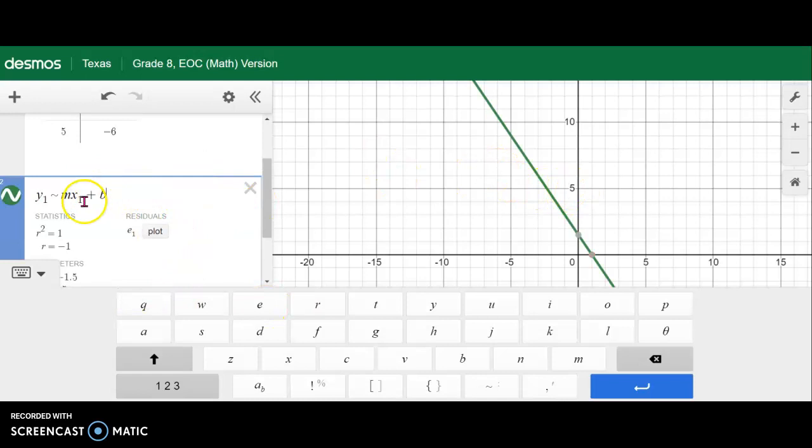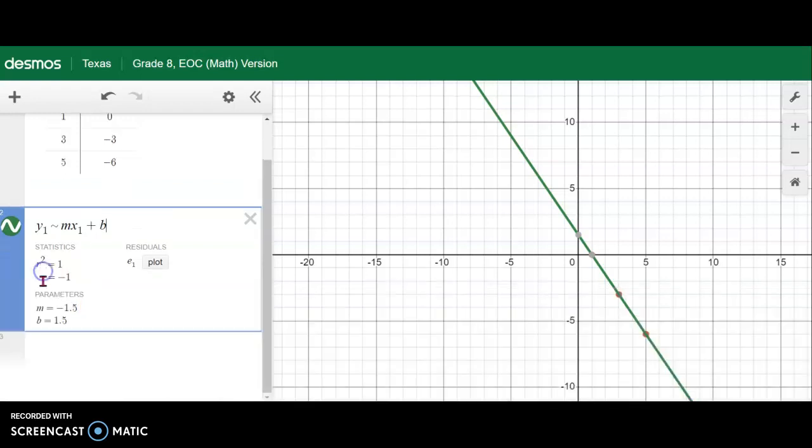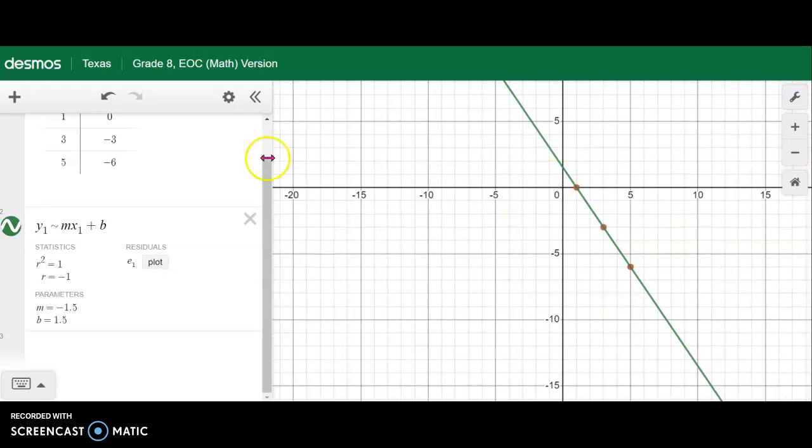So it looks like y equals mx plus b, but we did have to change a few things. Once you practice it you will get very used to it very easily. And you'll notice that the line that it creates goes through our points, our three points that we have.